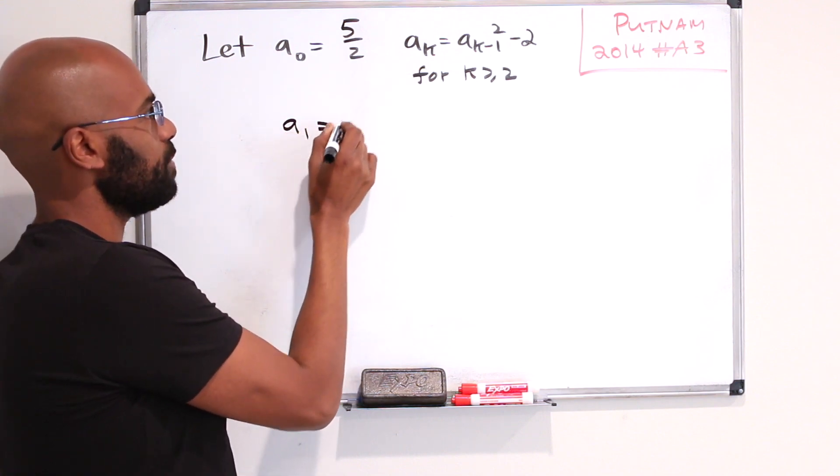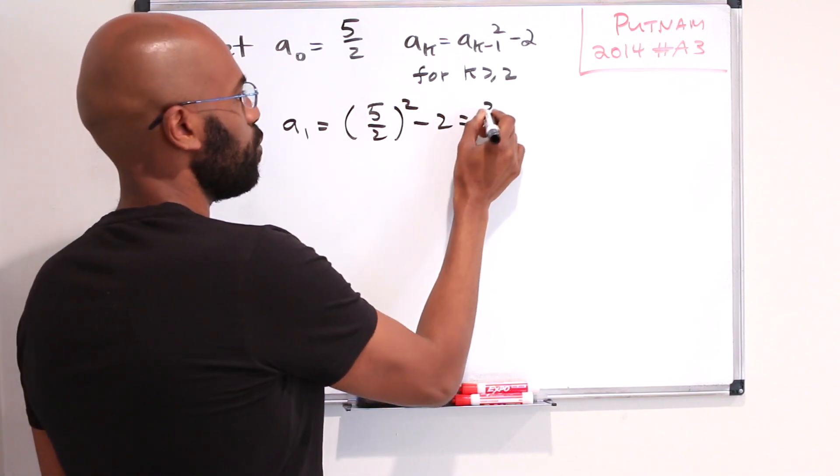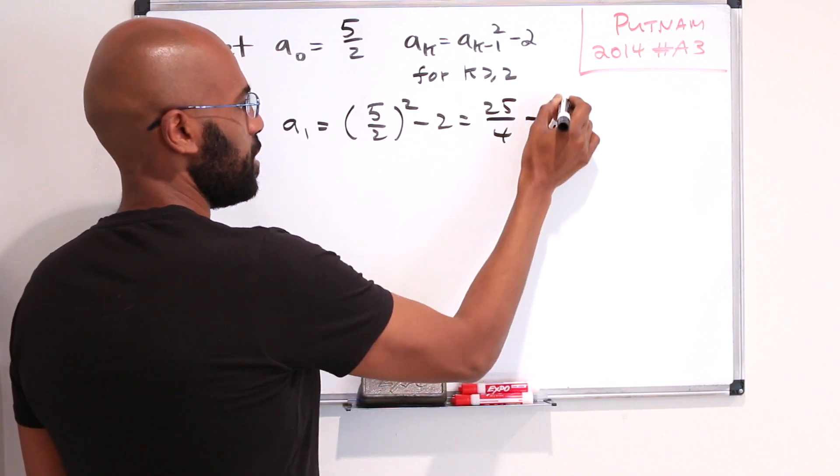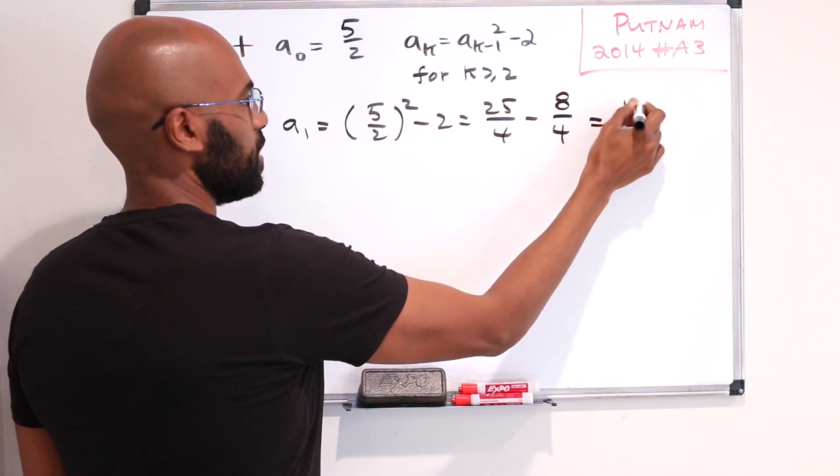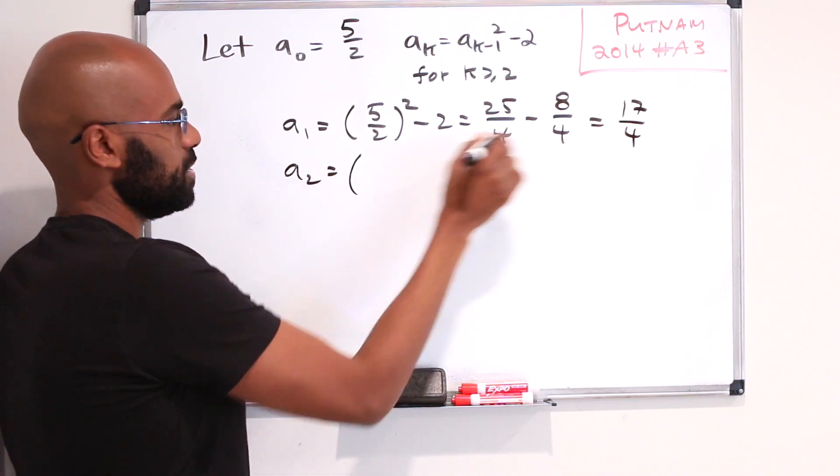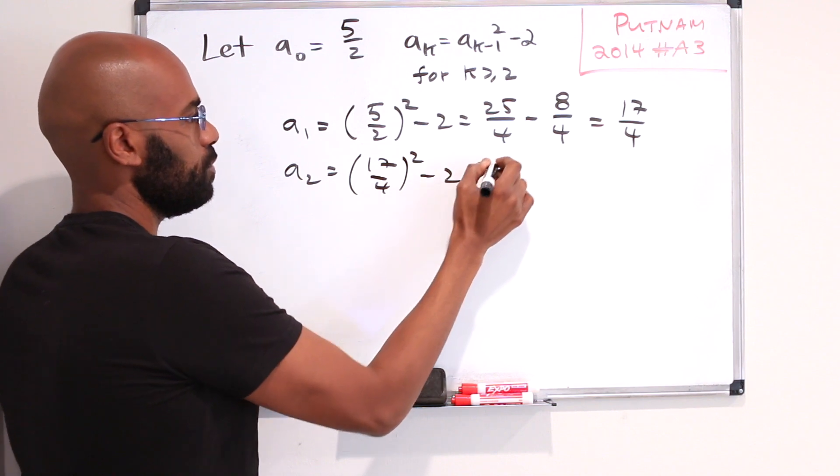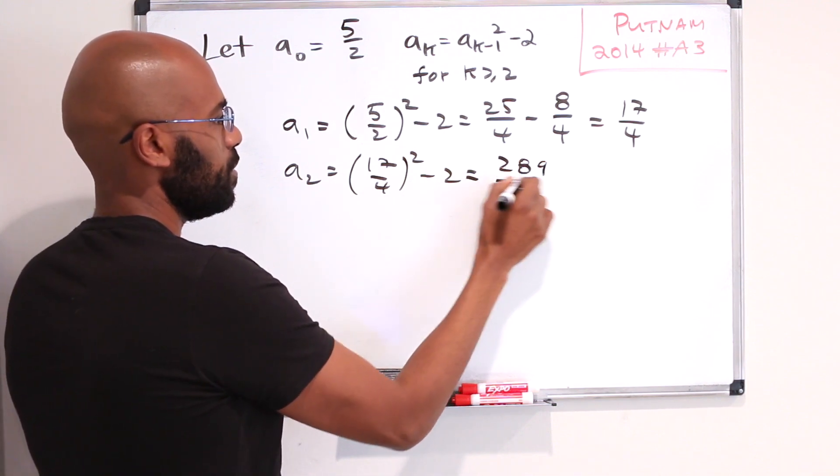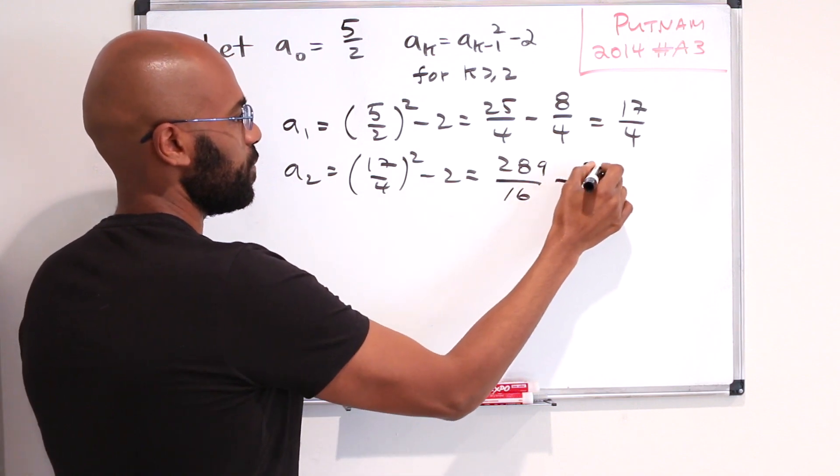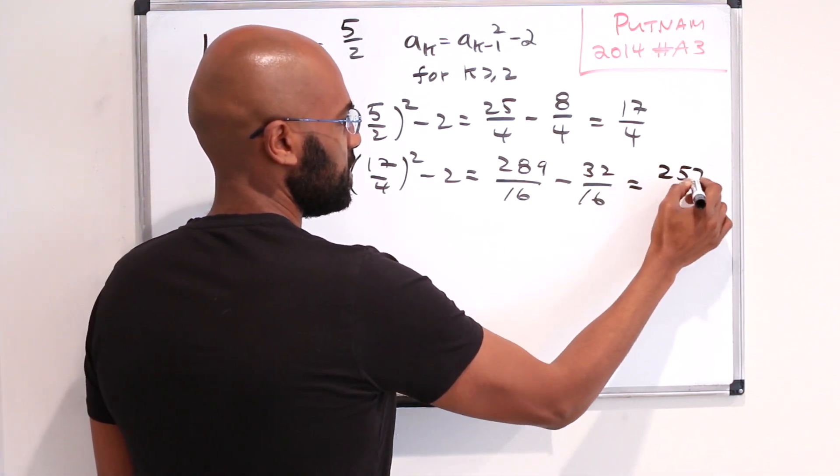So first of all a_1 is a_0 squared minus 2. So that's 25 over 4 minus, I'll use the same denominator, we get 8 over 4 giving us 17 over 4. And then a_2 is this quantity squared minus 2 which is 289 over 16 minus, and I'll use the same denominator, 32 over 16 which works out to 257 over 16.